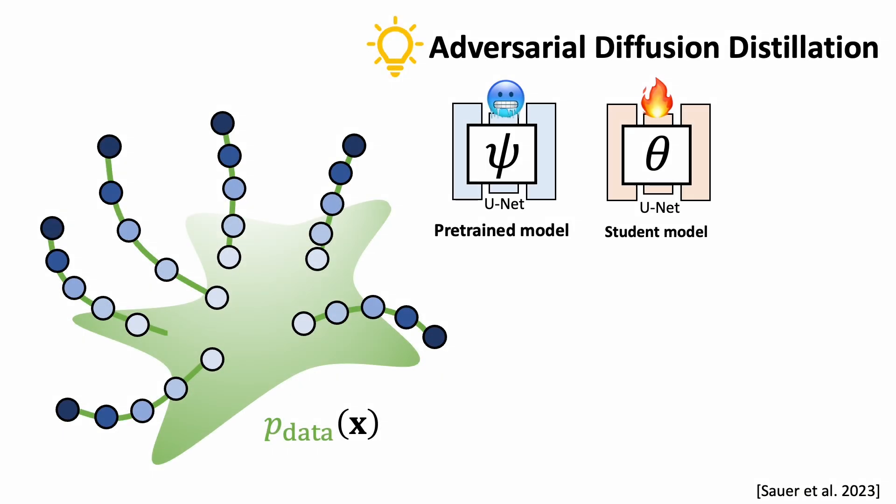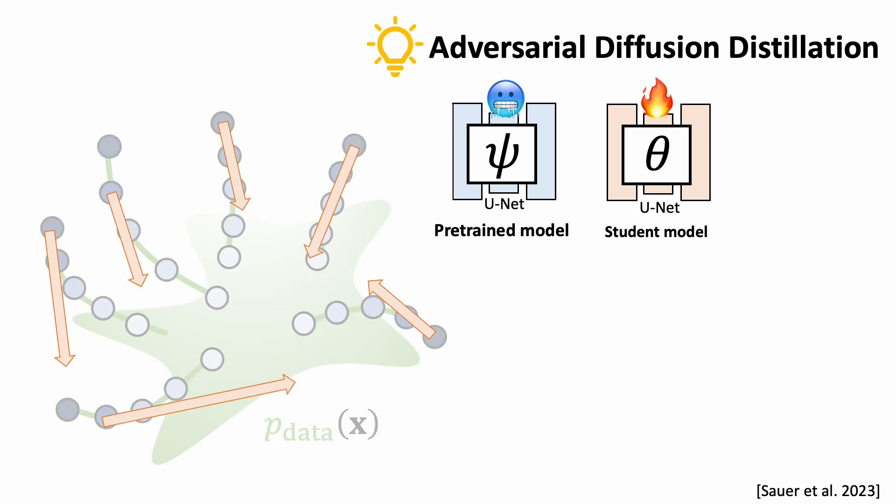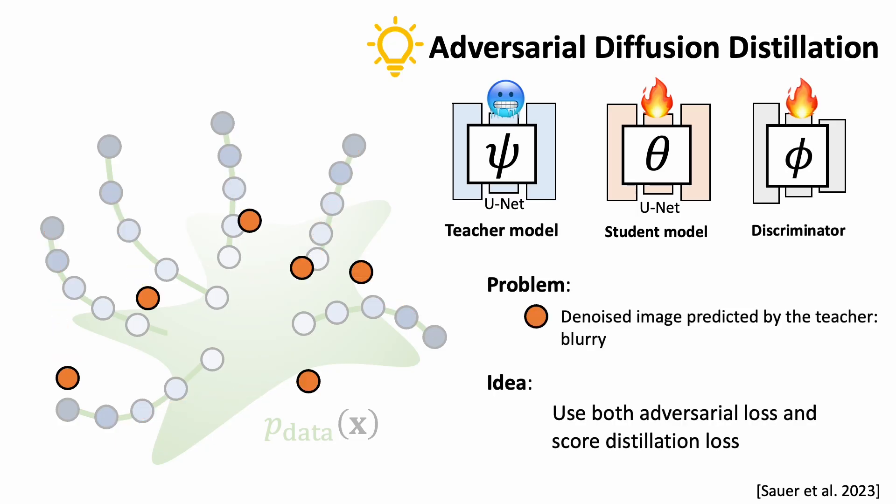Another recent distillation method trained the student denoising model using score distillation. However, these predictions are usually blurry. The main idea is to apply an adversarial loss by training a discriminator. Here are some results.